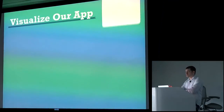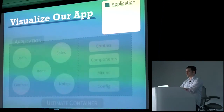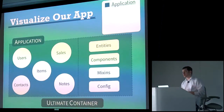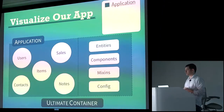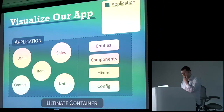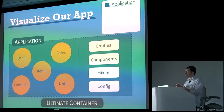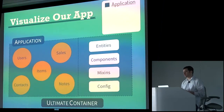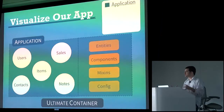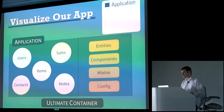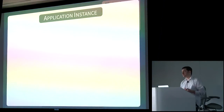So this is where the fun starts. I'm going to go through visualizing each one of these. We have our application object, which is like the ultimate container everything hangs off of. The circles on the left would be like app modules — the things on the application that are specific user-facing. The stuff on the right is like the shared utilities: entities, components, mixins, configs, and so on.